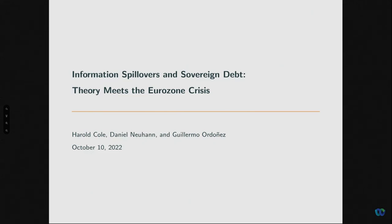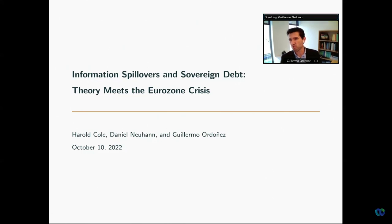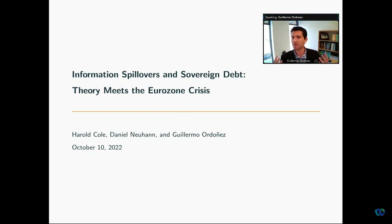This is going to be about sovereign debt. But from the start, I want to mention that in contrast to most of the literature on sovereign debt, which is motivated mostly by secondary markets, here we want to take a step back and think about how the design of primary markets affects the behavior of sovereign debt. Because the primary market is mostly where the cost of financing of governments is determined — where governments go and raise funds.